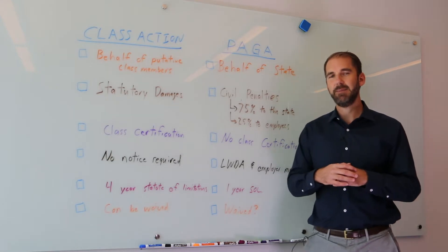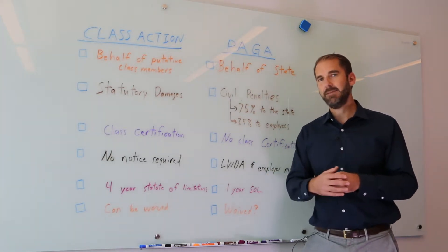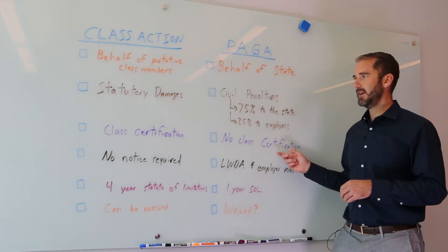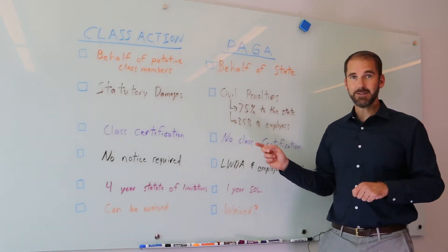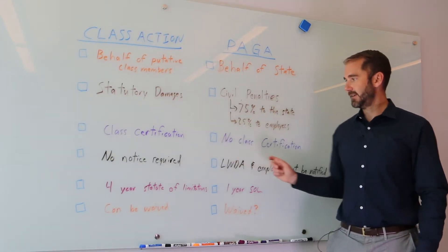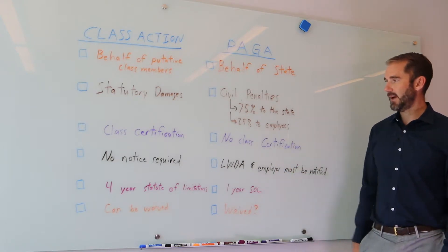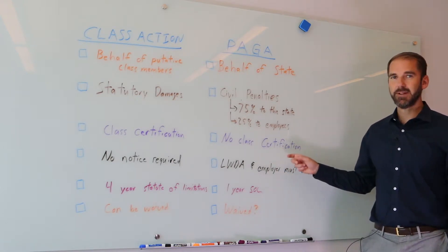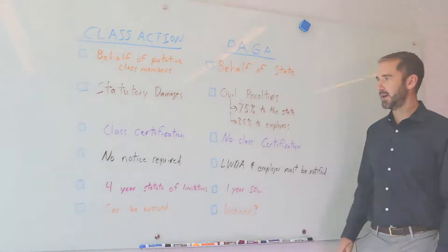A PAGA claim is a representative claim and a different type of claim than a class action. Employers don't have the same kind of defenses to class certification in a PAGA claim as they would in a class action. So the PAGA claim is a little easier for plaintiffs to bring and to allege upfront.